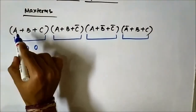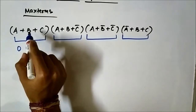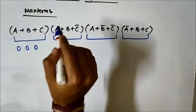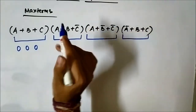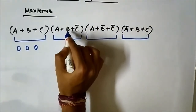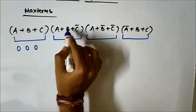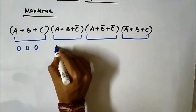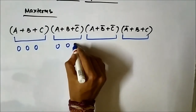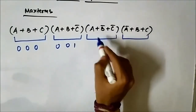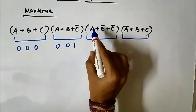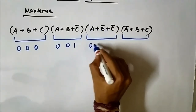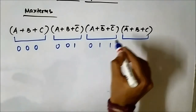Whenever in digital electronics you see a plus sign, it means it is an OR operation; when you see multiplication, it means it is an AND operation. So here, in a plus b plus c-bar, a and b are uncomplemented and c is complemented, so it represents 0, 0, 1.